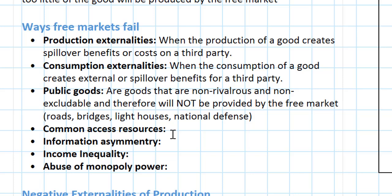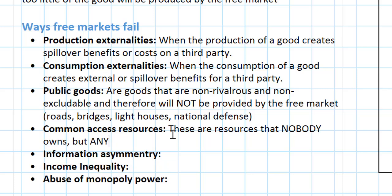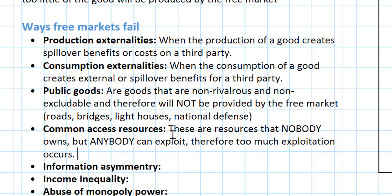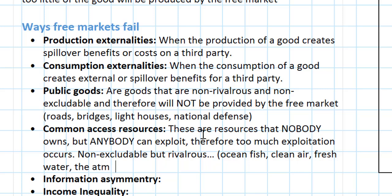The next type of market failure is what we call common access resources. These are resources that nobody owns but anybody can exploit, and therefore too much exploitation occurs. Common access resources are non-excludable but rivalrous — unlike public goods which are non-excludable and non-rivalrous. The consumption of common access resources creates rivalry, meaning other people are unable to consume them once somebody has done so. Resources such as ocean fish, clean air, fresh water, and the atmosphere tend to be over-exploited by the free market, and without some government intervention too much of these goods are consumed or too many natural resources are exploited.